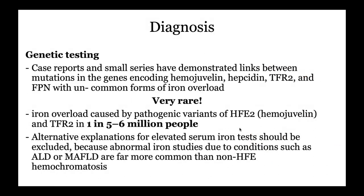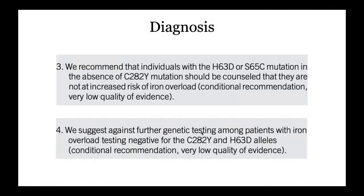Other rare mutations like hemojuvelin and transferrin receptor mutations are so rare that you don't actually need to test for them — they occur in about one in millions of people. For people with mutations other than C282Y, you tell them they are not at increased risk for iron overload, and the ACG recommends against further genetic testing for these people.